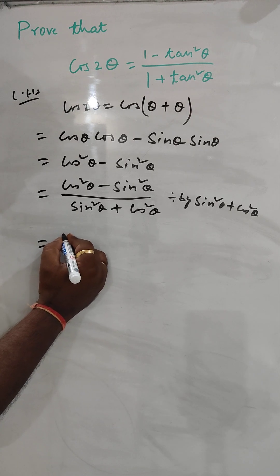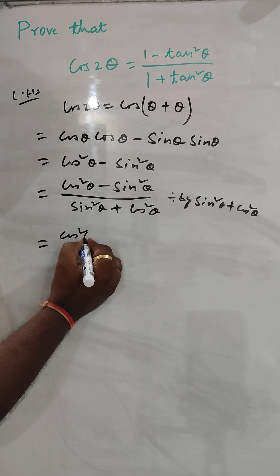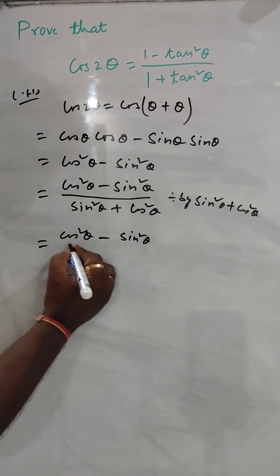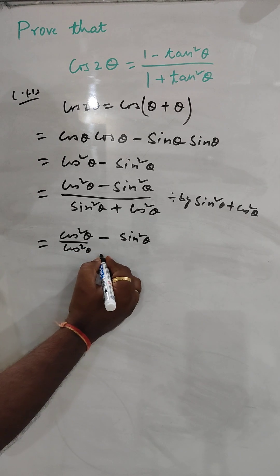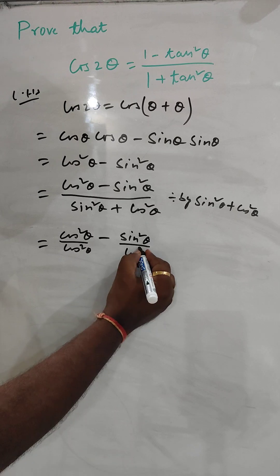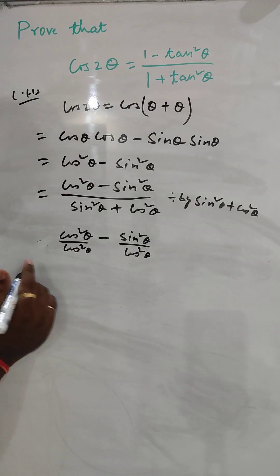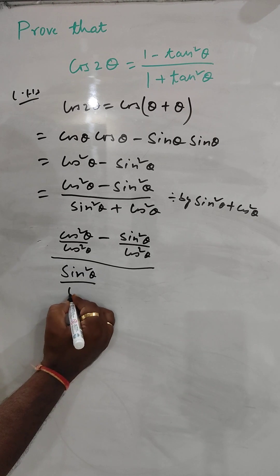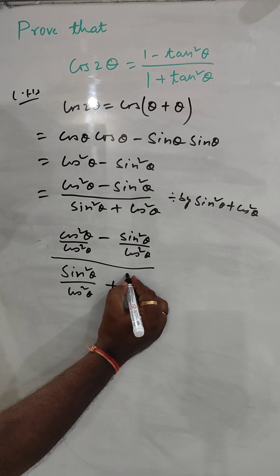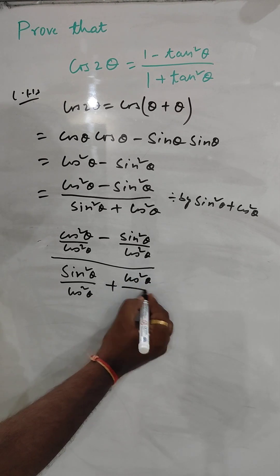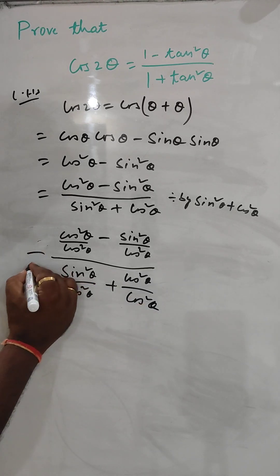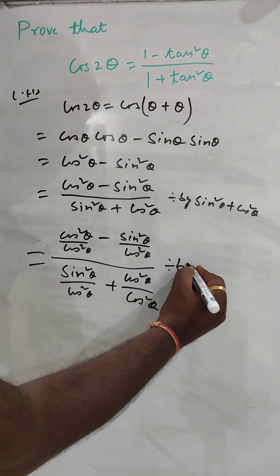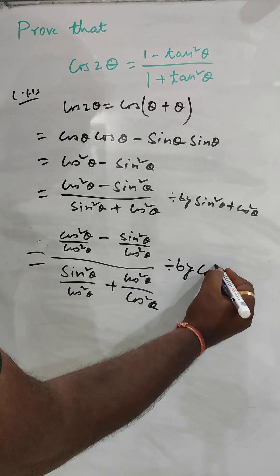Now, we take cos²θ minus sin²θ in the numerator and divide it by cos²θ, and in the denominator sin²θ plus cos²θ we also divide by cos²θ. So both the numerator and denominator are divided by cos²θ.